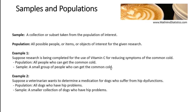Before we get started with the sampling methods, I want to review sample versus population. Remember that a sample is a collection or a subset, a much smaller group, that is taken from your population of interest. Your population of interest is completely dependent on the research that you or your group are performing. In general, a population would be considered all possible people or items or objects of interest for the given research that you're looking at. When you do research, you would define your population of interest and then from that population you would collect a sample.